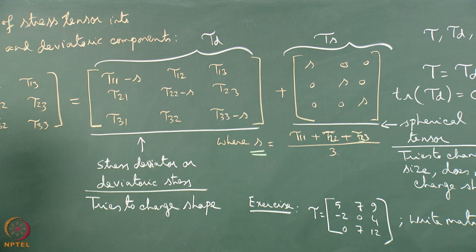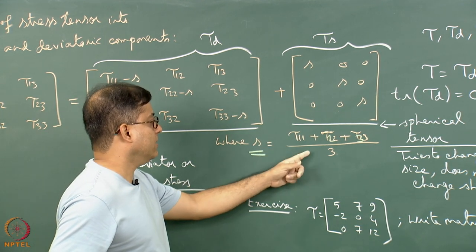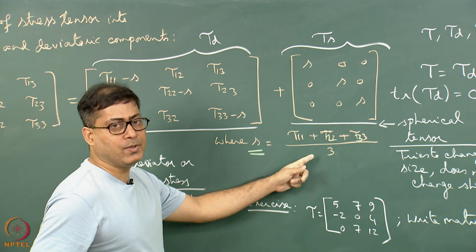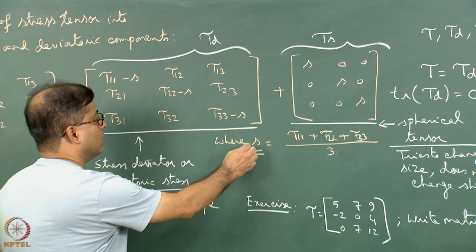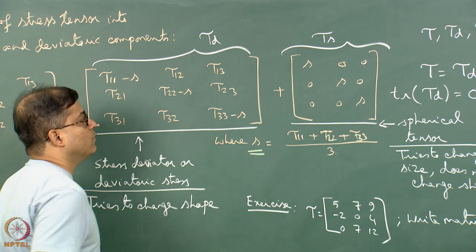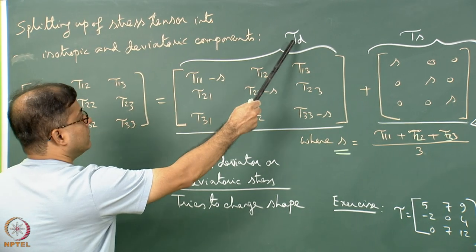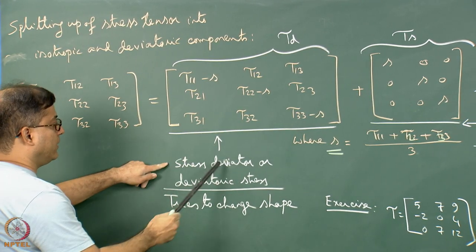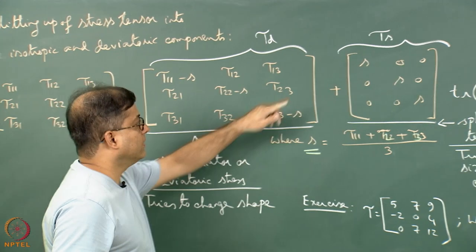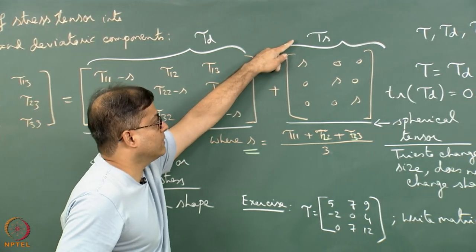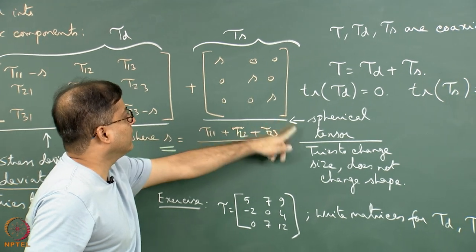That means we sum the normal stresses and take their arithmetic mean, which is called S. The first matrix is known as tau_D, the deviatoric or stress deviator matrix, and the second is called tau_S, the spherical tensor.